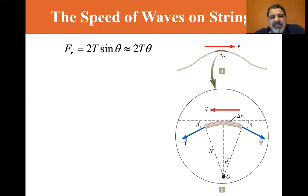It's 2T sine theta. Well, for small angles, we can use the small angle approximation, saying sine theta is approximately equal to theta, and that works. Around 10 degrees it starts breaking down, but for small degrees, 2T sine theta is approximately 2T theta.